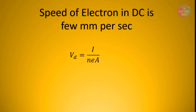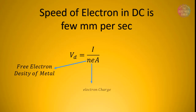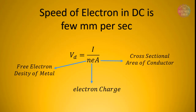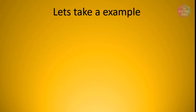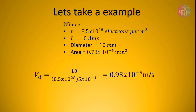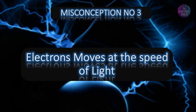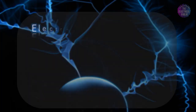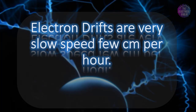The speed of electrons in DC can be calculated with a formula where n is the free electron density of the metal, e is the electron charge, and A is the cross-sectional area of the conductor. For example, for copper the electron density is 8.5×10²⁸ electrons per meter cube. If a 10 ampere current flows through a conductor of 10 millimeter diameter, putting all these values in the formula gives a drift velocity equal to 3.36 centimeters per hour — that is very, very slow. Hence electrons don't move at the speed of light; contradictorily, they are drifting at a very slow speed, even just a few centimeters per hour.